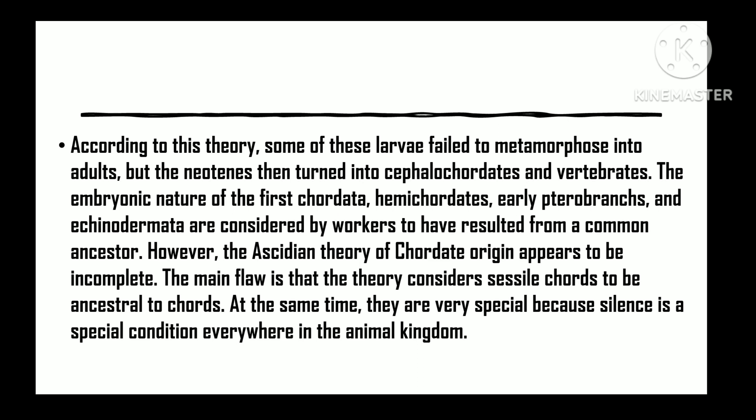According to this theory, some of these larvae failed to metamorphose into adults but became neotenous and later evolved into the cephalochordates. Cephalochordates and vertebrates: The sessile nature of the primitive chordate ancestry — hemichordates, primitive pterobranchs, and echinoderms — is considered by workers to result from a common ancestry. However, the ascidian theory of chordate origin does not seem to be perfect. The principal drawback is that the theory considers sessile urochordates to be ancestral to the chordates, whereas sessility is a highly specialized condition wherever it occurs in the animal kingdom.